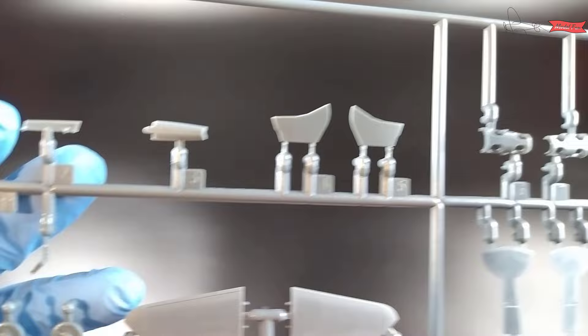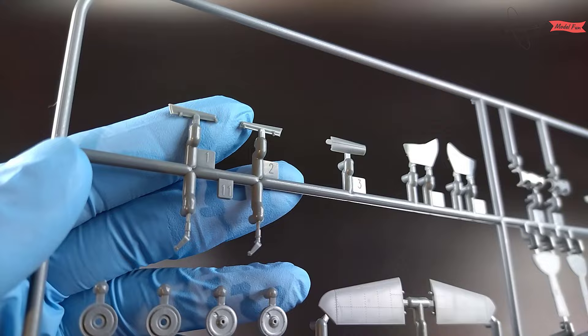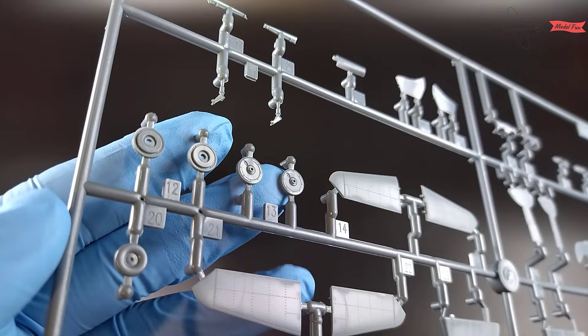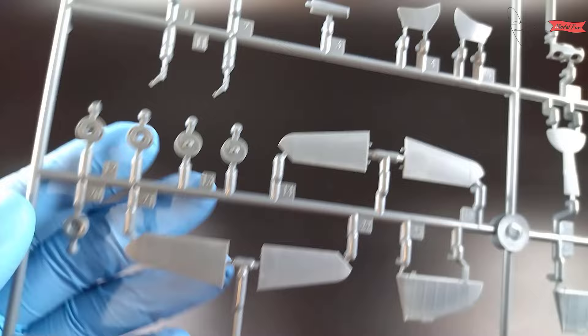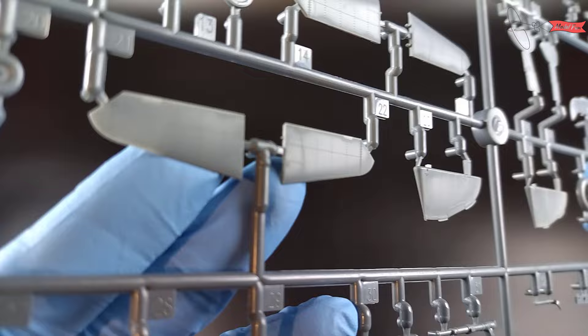Sprue E, so we have the wheel wells, covers for the wheel wells, two options for the tail wheel cover, open and close. Tail elements, stabilizers, landing gear legs.